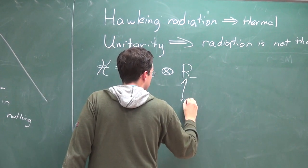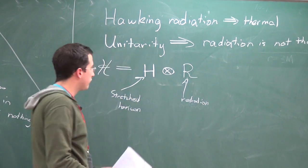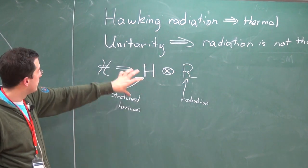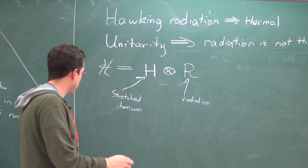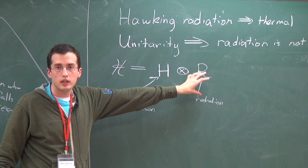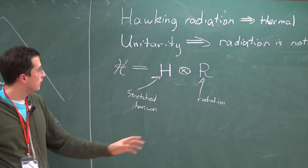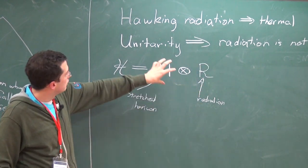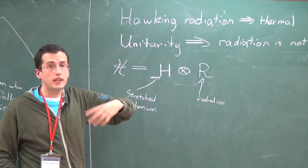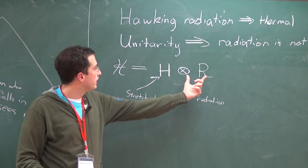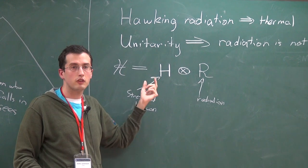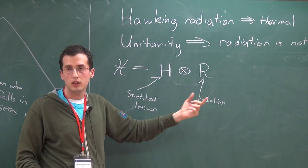The dimension of the whole Hilbert space — horizon plus radiation — is e to the entropy of the black hole you started with. Some energy leaves in the form of radiation, so the size of the horizon Hilbert space factor is e to the entropy of the remaining black hole. As time goes on, this decomposition changes, with certain parts of the Hilbert space getting transferred into the radiation.